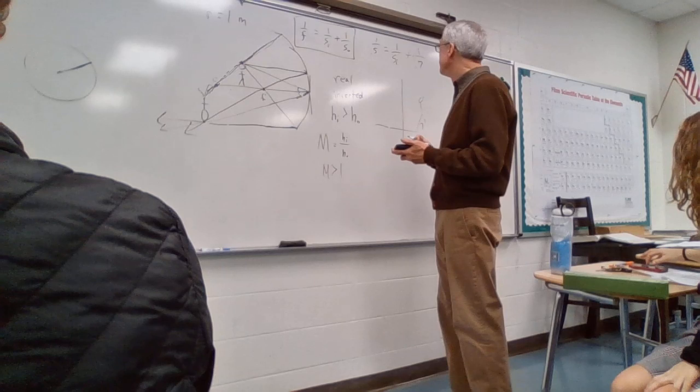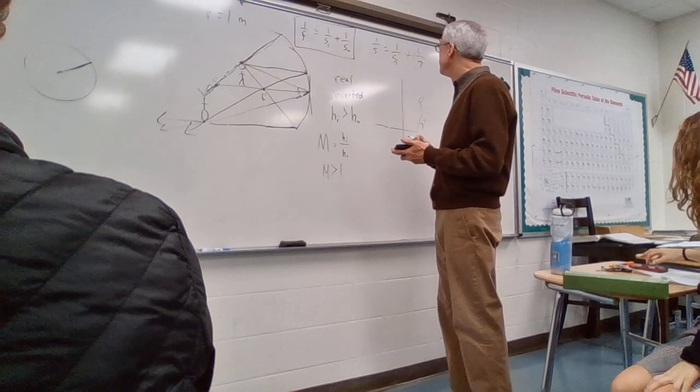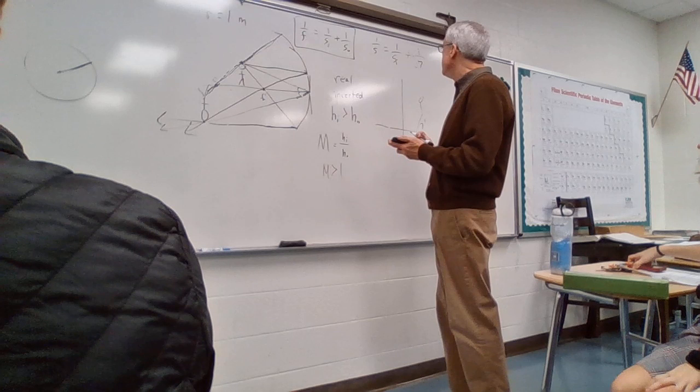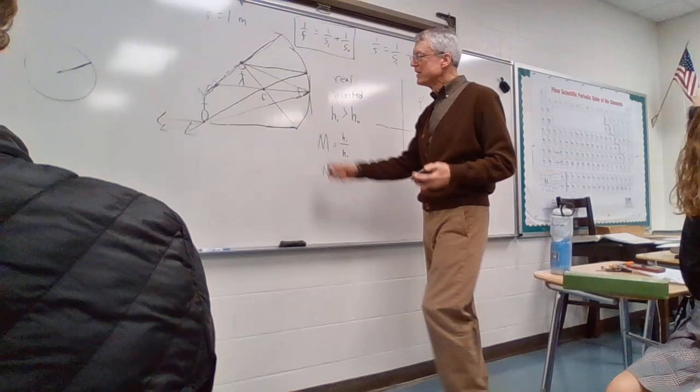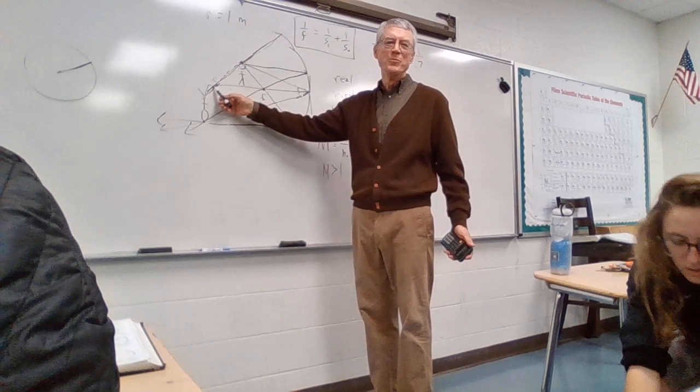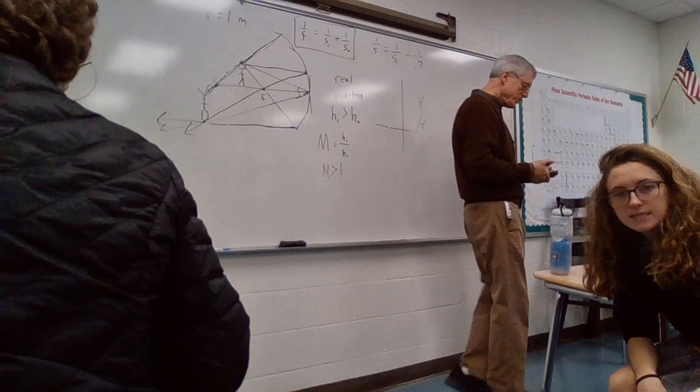Let's try some numbers. Say the radius of the mirror is 1 meter, so f = 0.5 meters. The person stands 0.7 meters from the mirror, so s_o = 0.7. Plugging into the mirror equation: 1/0.5 = 1/s_i + 1/0.7. Solving gives s_i = 1.75 meters. That makes sense — it's farther than the 1-meter center point, which is what we expected from the diagram.